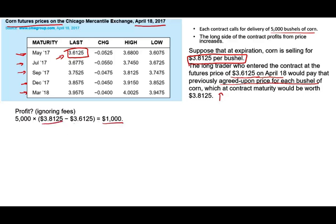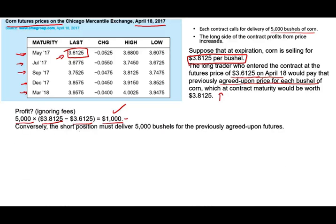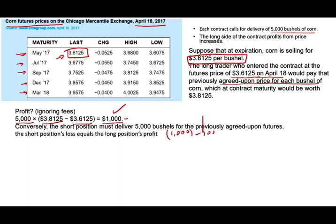Why enter this contract? Because you feared the price would go up — and indeed it did. Your profit is $3.8115 minus $3.61 times 5,000 bushels = roughly $1,000. If you had not bought the contract you'd have to pay $3.81 instead of $3.61. Subtracting a premium of, say, $200, your net profit is $800. The short position — who promised to deliver at $3.61 — loses roughly $1,000, minus the $200 premium they received, so their net loss is $800.